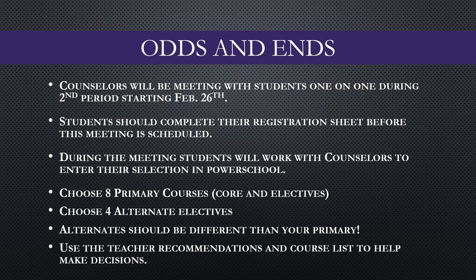You are going to be asked to choose eight primary courses. This will include your core courses and your top elective choices. You will also be asked to choose four alternate electives. I cannot stress enough that your alternate choices need to be different from your primary. All students think that if they put their selection in both primary and alternate they will be more likely to get it — this is definitely not true. PowerSchool does not work that way, so please choose 12 different courses. Teacher recommendations are visible in PowerSchool — use those to help guide you in your course selection.